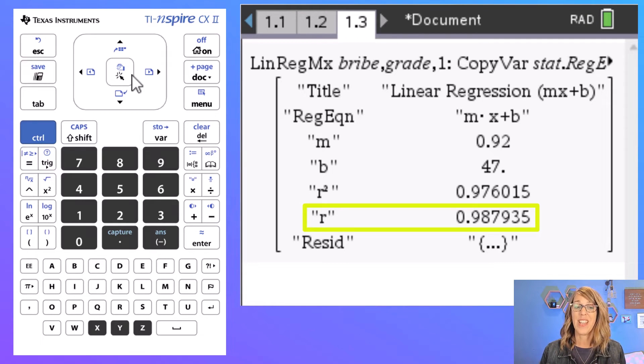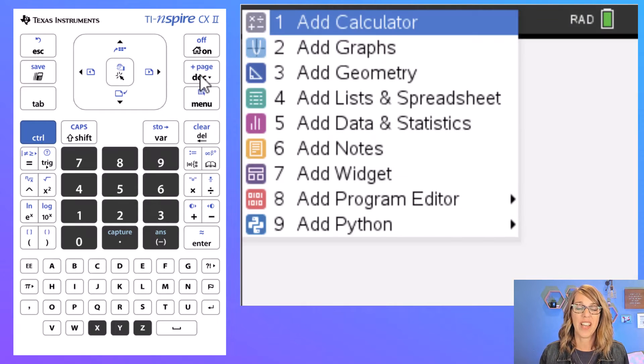Next let's do that scatter plot. So to do the scatter plot I want to add another page, so control, add page. This time we want to add data and statistics, so we'll add number five.